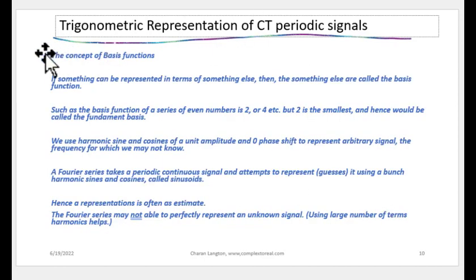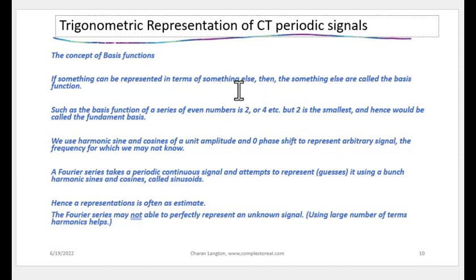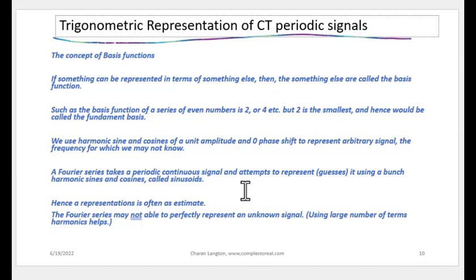Basis functions in Fourier analysis are the sinusoids. If something can be represented in terms of something else, that something else is called a basis function. For example, in a series 2, 4, 6, 8, the number 2 is the basis. We use harmonic sines and cosines of unit amplitude and zero phase shift to represent arbitrary signals. Fourier series takes a periodic continuous signal and attempts to represent it using harmonic sines and cosines — it is usually an estimate, not an exact replication.